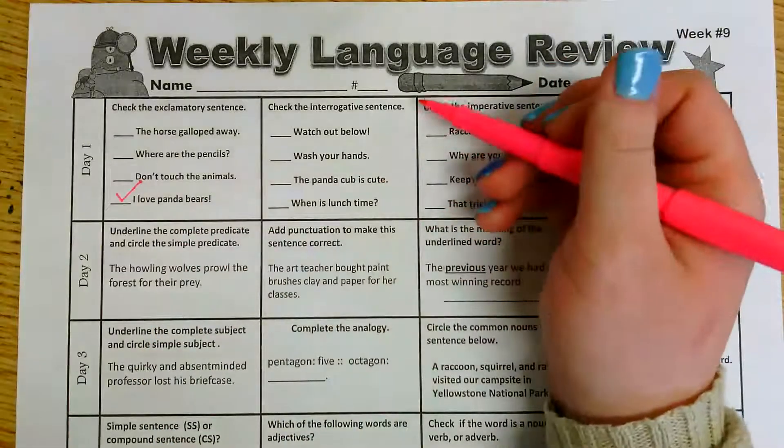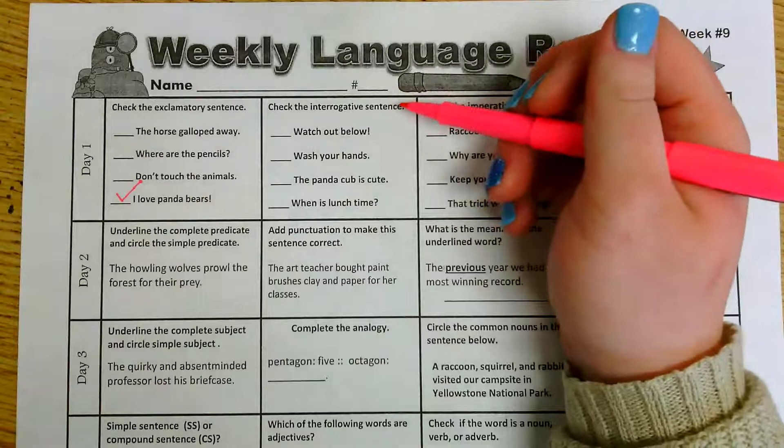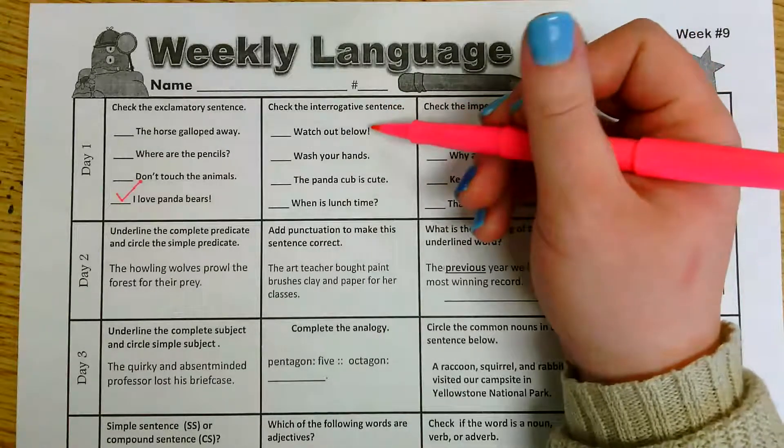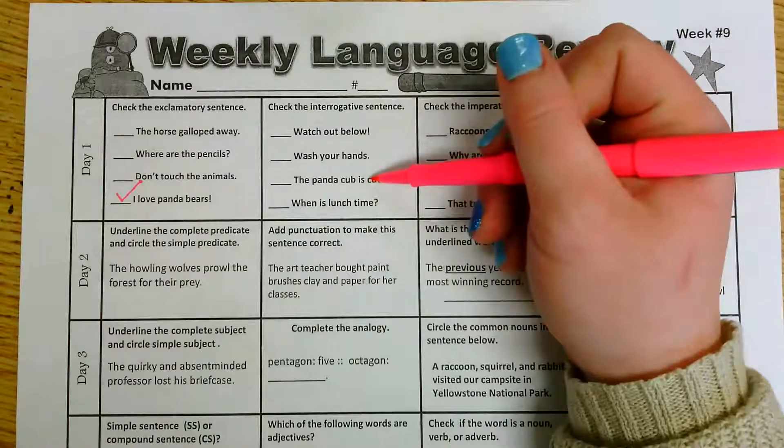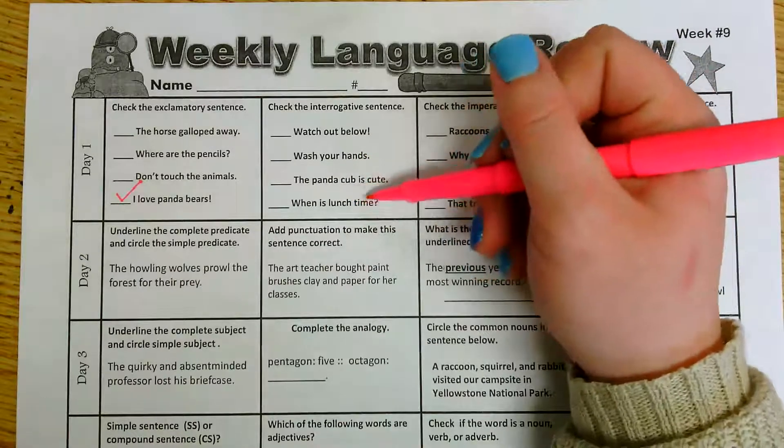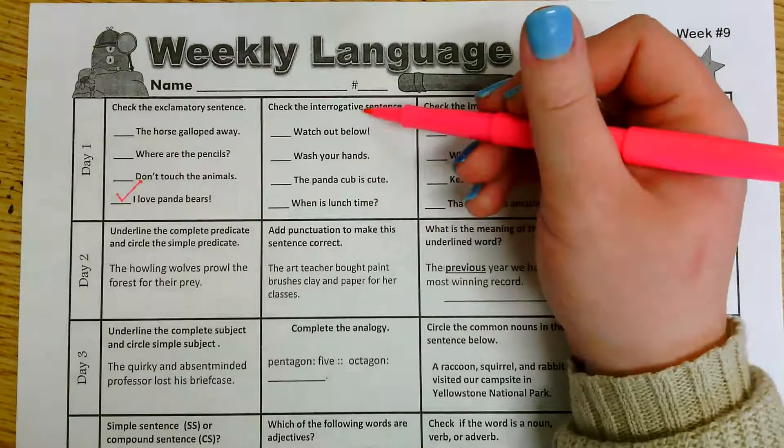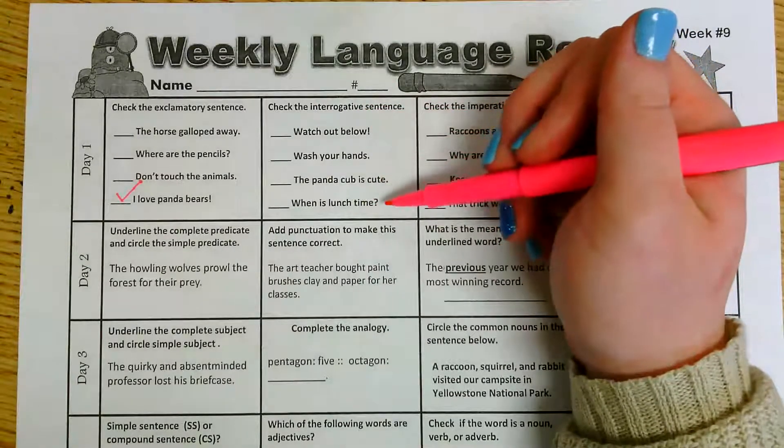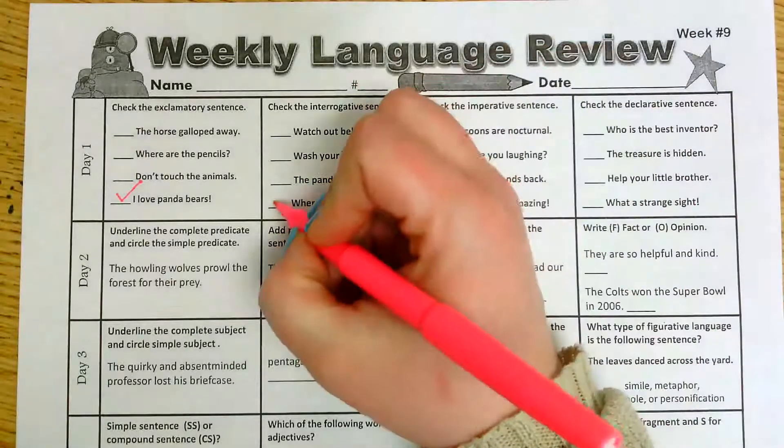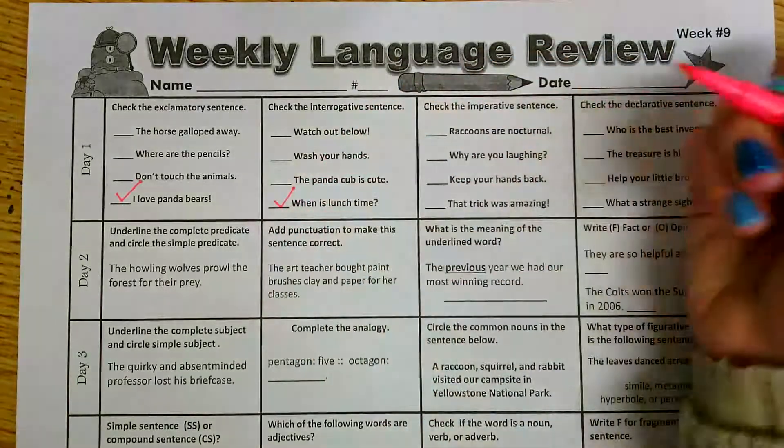Alright, the next one would be check the interrogative sentence. So we have watch out below, wash your hands, the panda cub is cute, when is lunchtime? With an interrogative sentence you are asking a question. So looking at the four sentences we have been given, when is lunchtime is the one that is asking something.